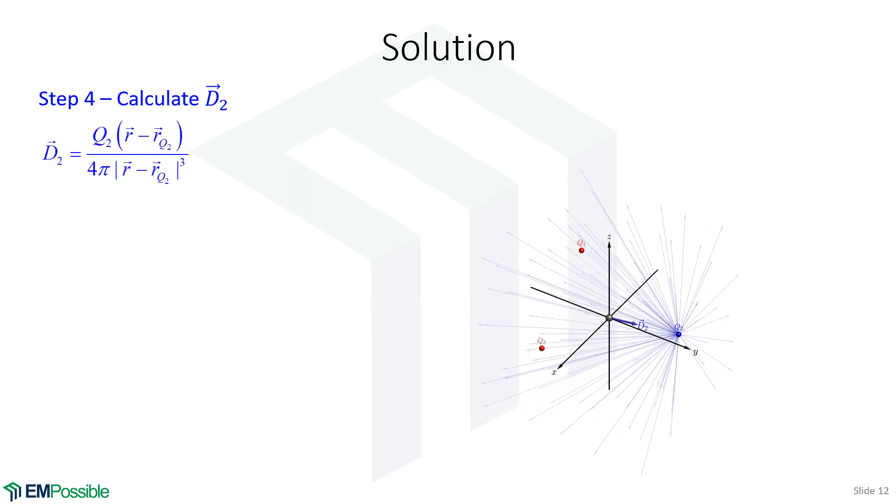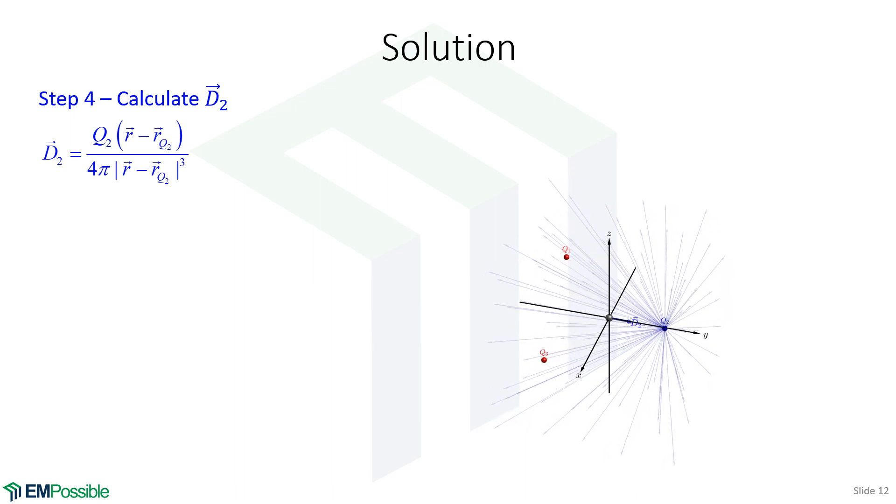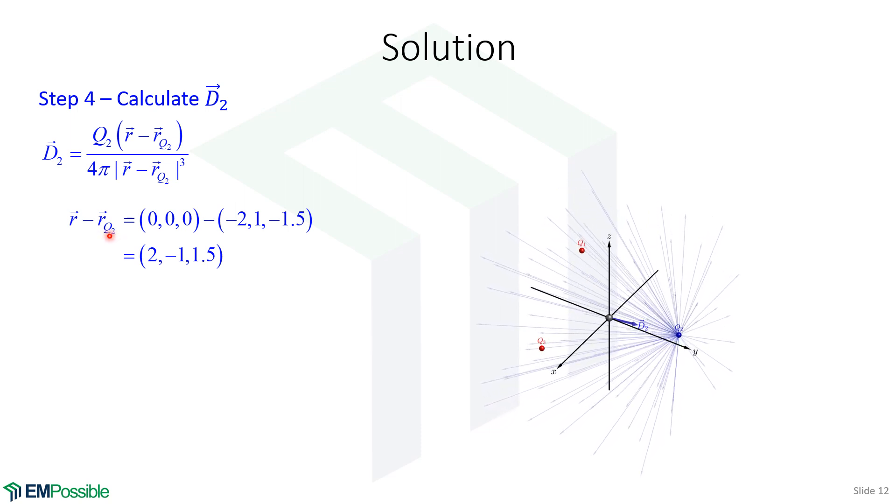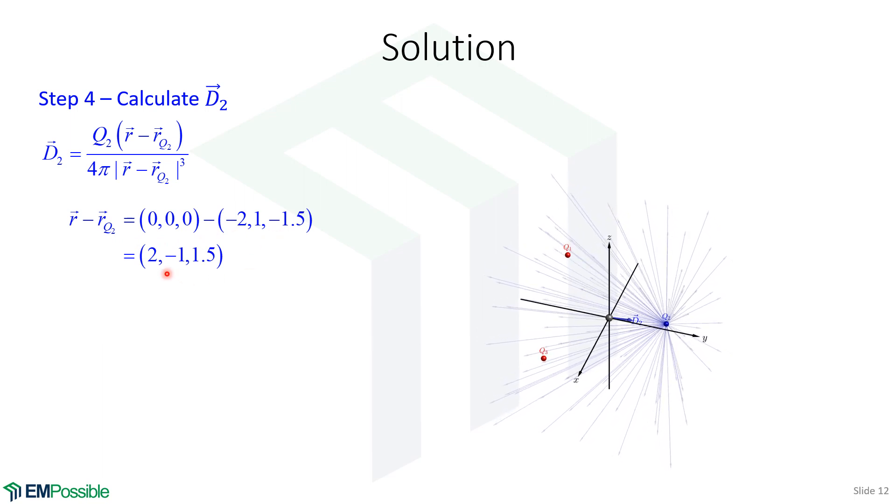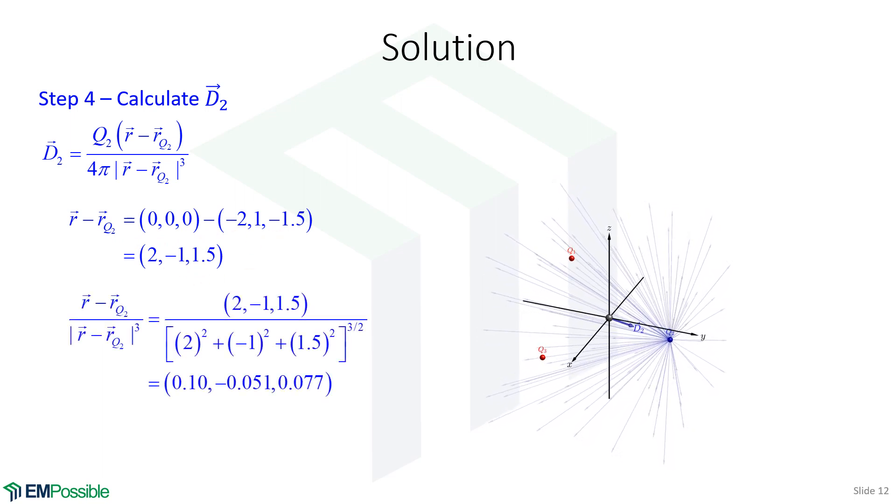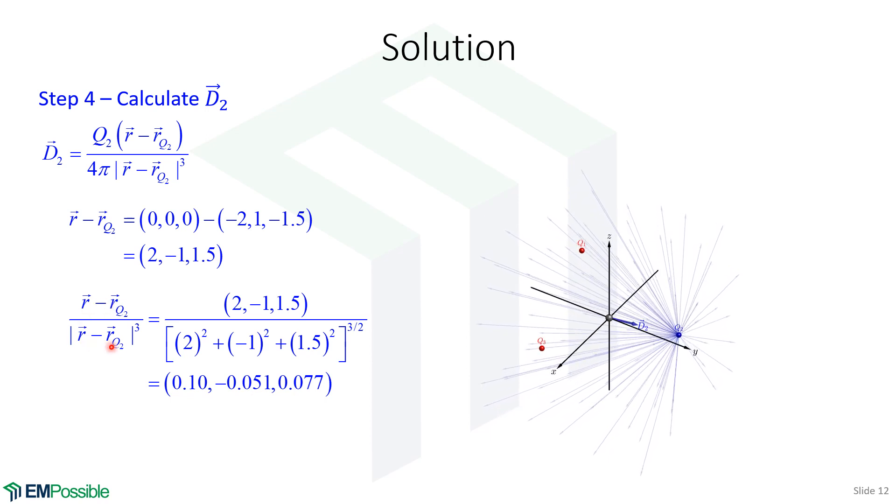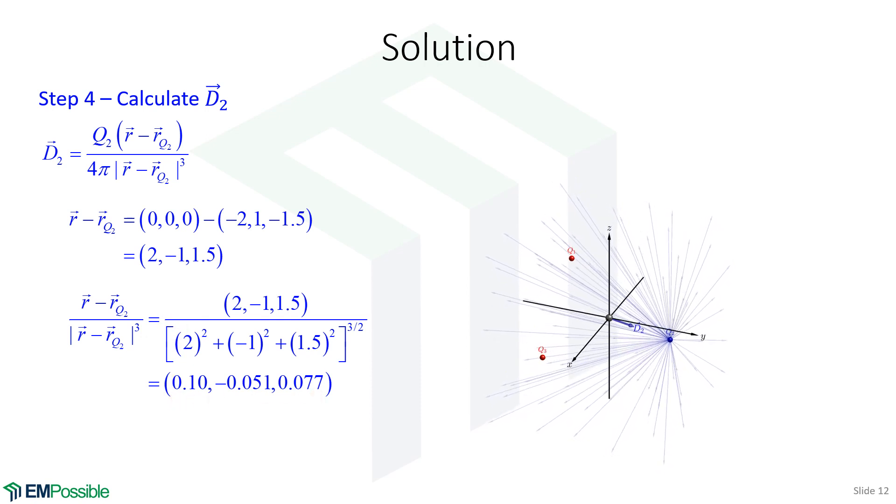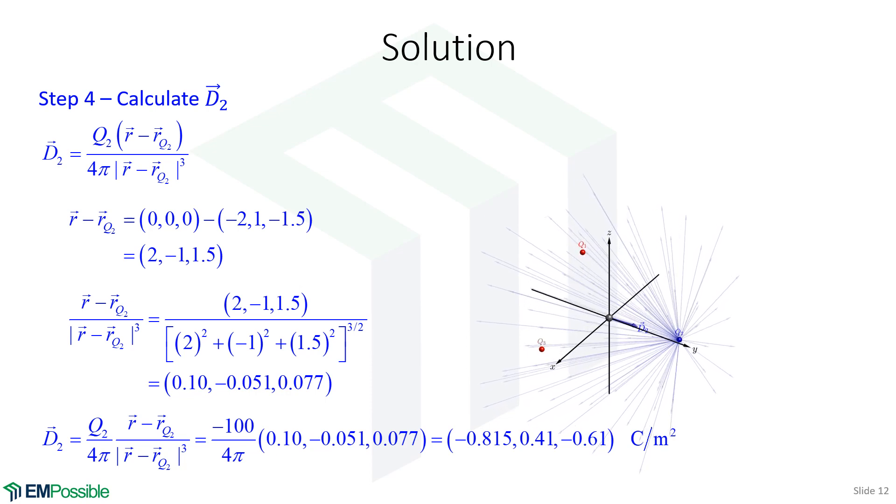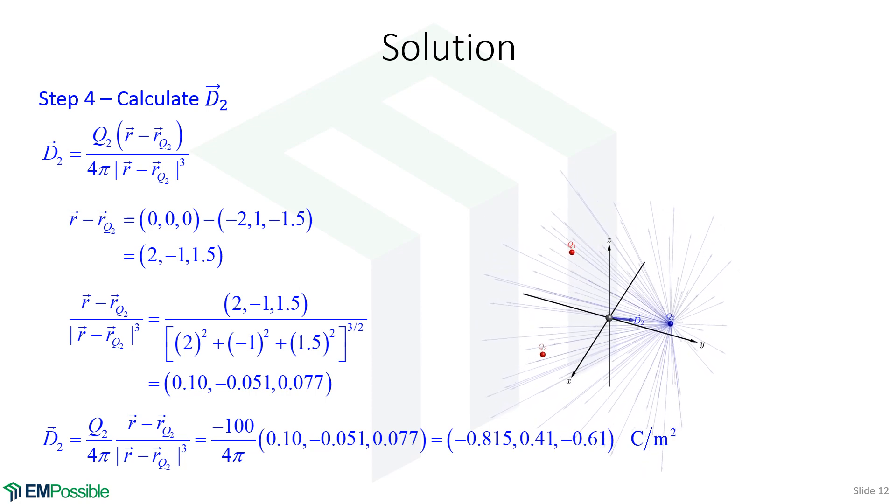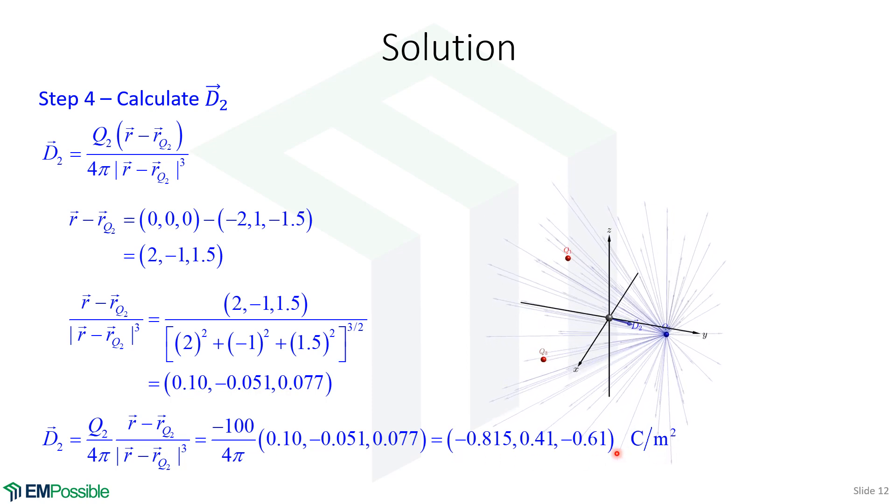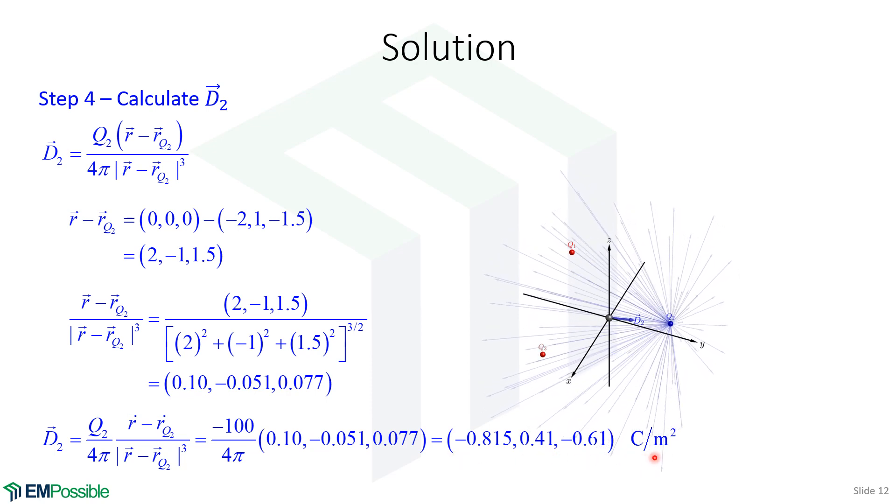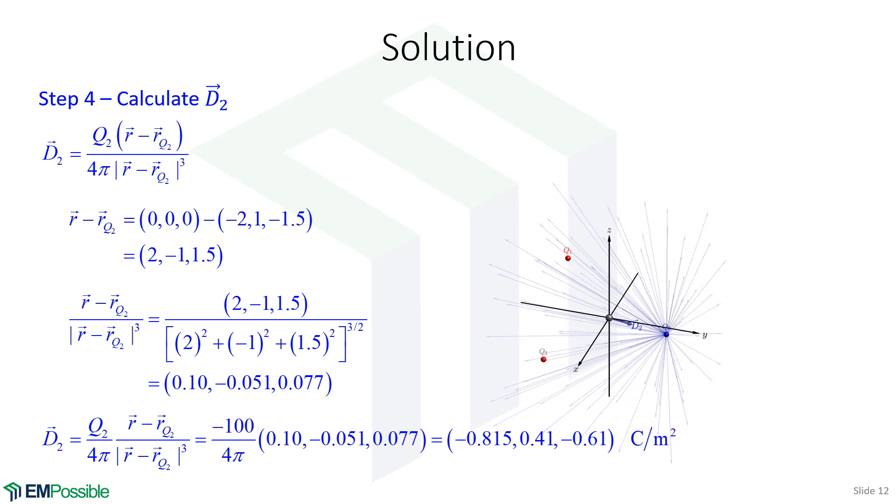Here's the general equation that we use, still using the form R minus RQ. We'll calculate R minus RQ. In this case, RQ is the position of the second charge, which we put in here. Now we have an expression for R minus RQ. Then we need the ratio of R minus RQ over the magnitude of that cubed. We throw in those numbers and end up with the ratio. We have that vector now. We throw all of that back into the original expression for D2, work through the math, and we have our final expression for D2. This is the electric flux density at the observation point as if it was only the second charge in the problem. The first and third charges aren't there and can't contribute.